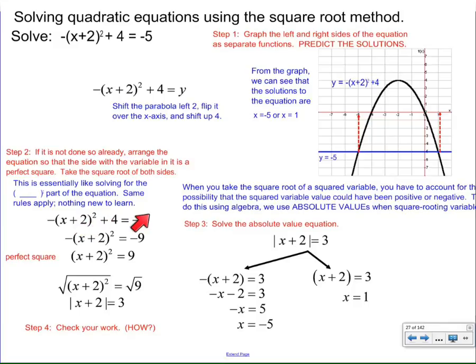Start by subtracting 4 from both sides. And then we're going to take the opposite of both sides. Then we're in a position now where we can take the square root of both sides, get the absolute value. And once we separate the absolute values, we can just do our algebra 1, find the solutions x equals negative 5 or x equals 1 as predicted.